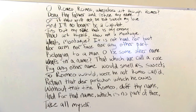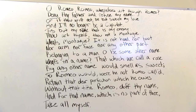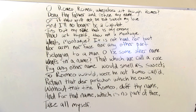Tis but thy name that is my enemy. Thou art thyself, though not a Montague. What's a Montague? It is nor hand, nor foot, nor arm, nor face, nor any other part belonging to a man. O be some other name. What's in a name? That which we call a rose by any other name would smell as sweet. So Romeo would, were he not Romeo called, retain that dear perfection which he owes without that title? Romeo, doth thy name, and for that name which is no part of thee, take all myself.